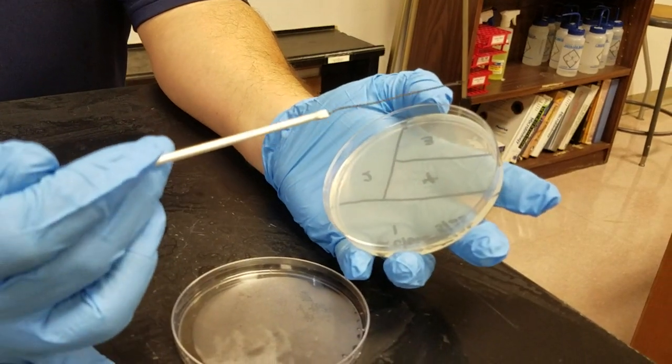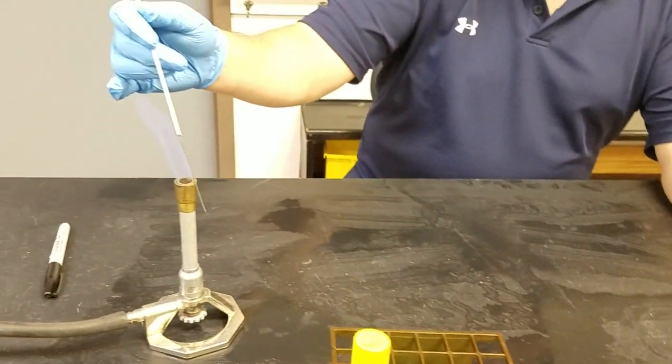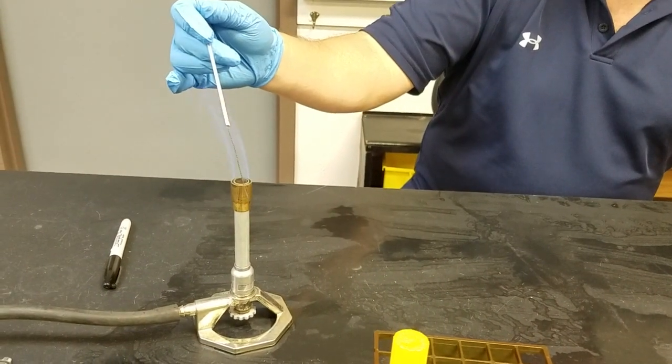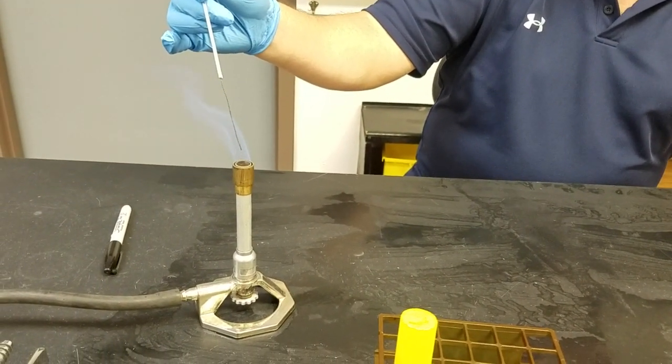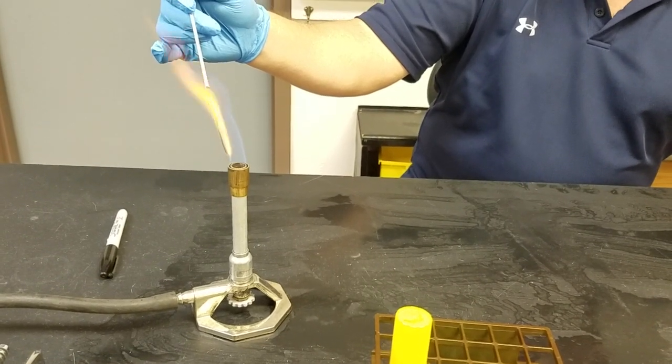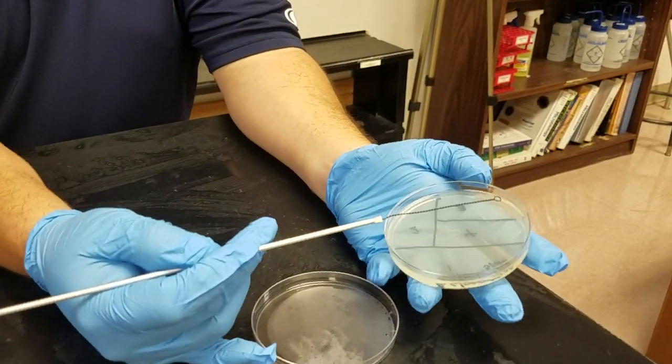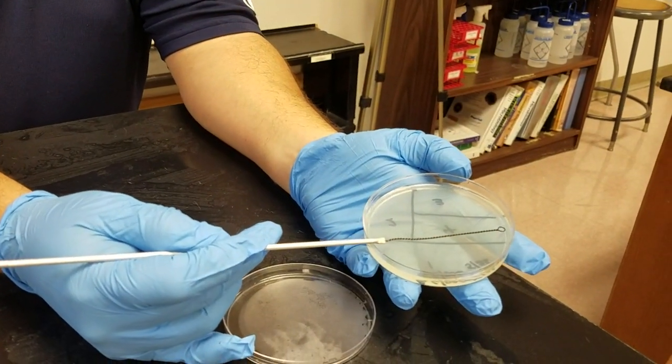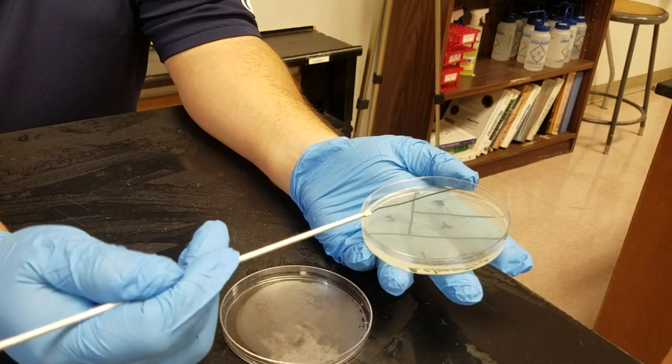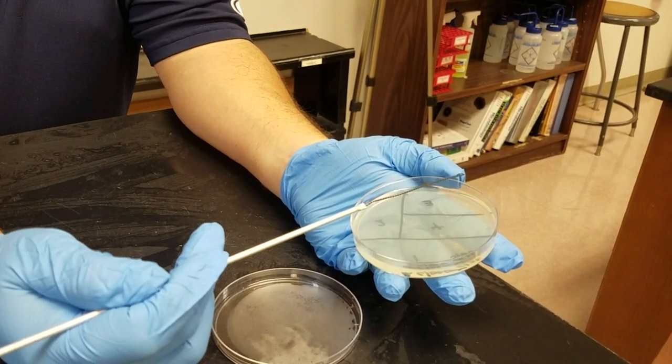I'm going to be interested in that last quarter of the third quadrant, but before I do that, I want to flame the loop one last time. Nice and orange, really hot. Come back to the plate and touch it to the area of the fourth quadrant I'm not going to use.